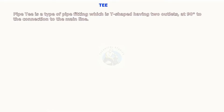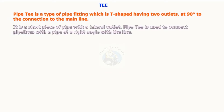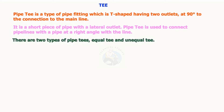Pipe T is a type of pipe fitting which is T-shaped having two outlets at 90 degrees to the connection to the main line. It is a short piece of pipe with a lateral outlet. Pipe T is used to connect pipelines with a pipe at a right angle with the line. There are two types of pipe T's: equal T and unequal T.